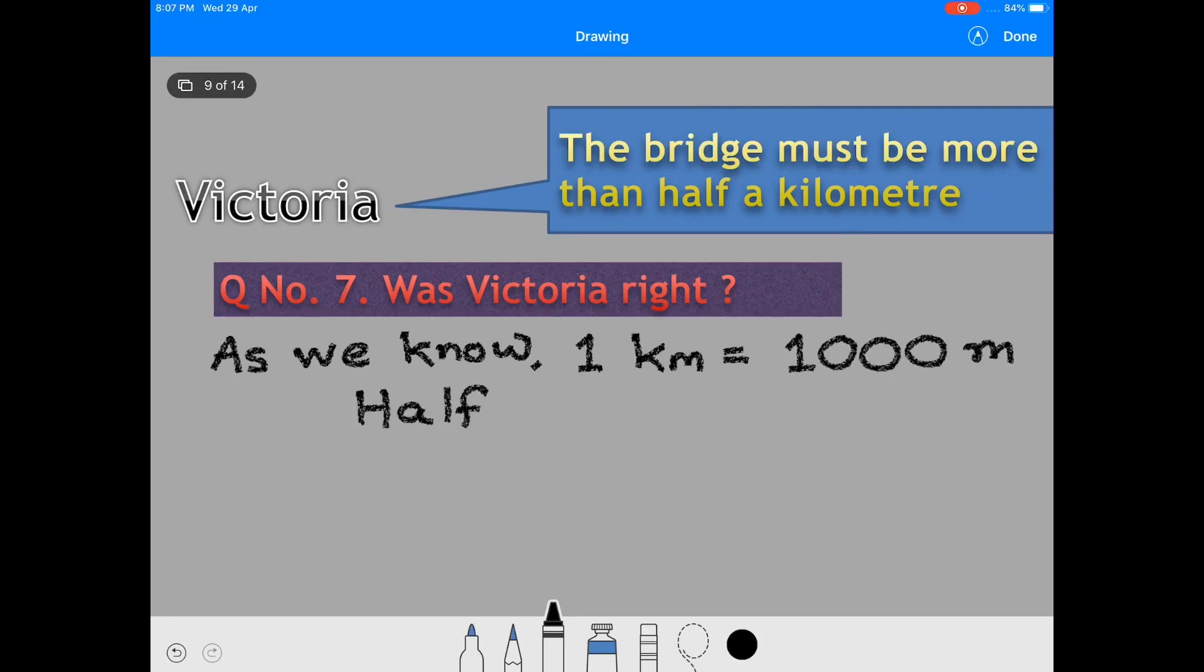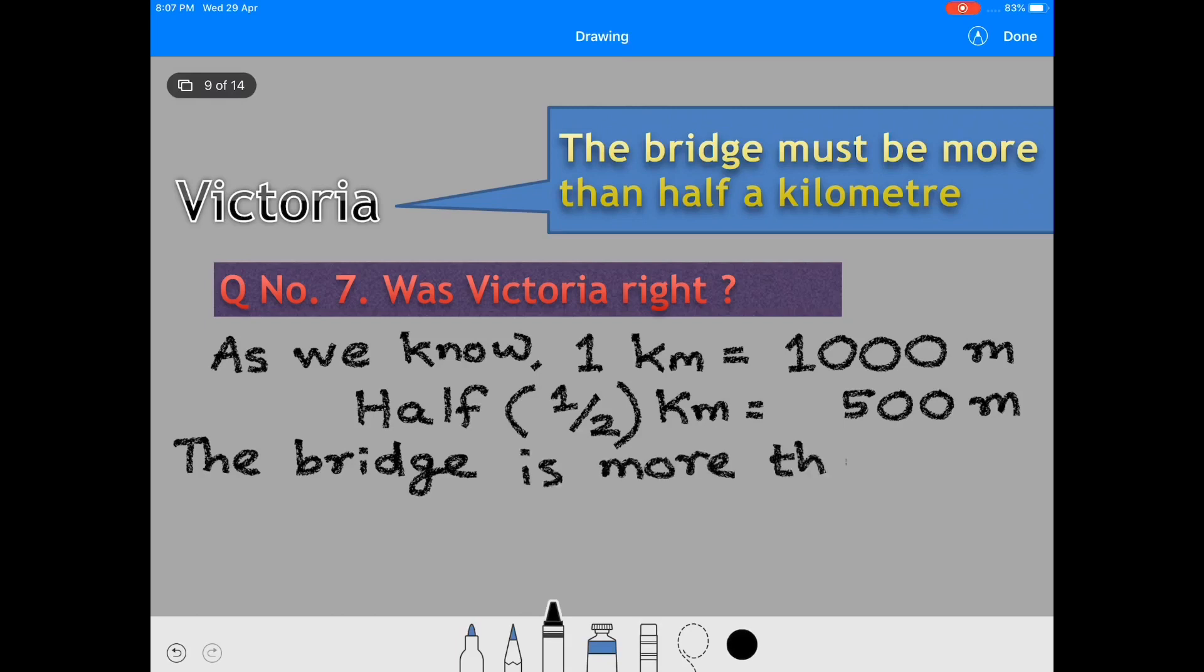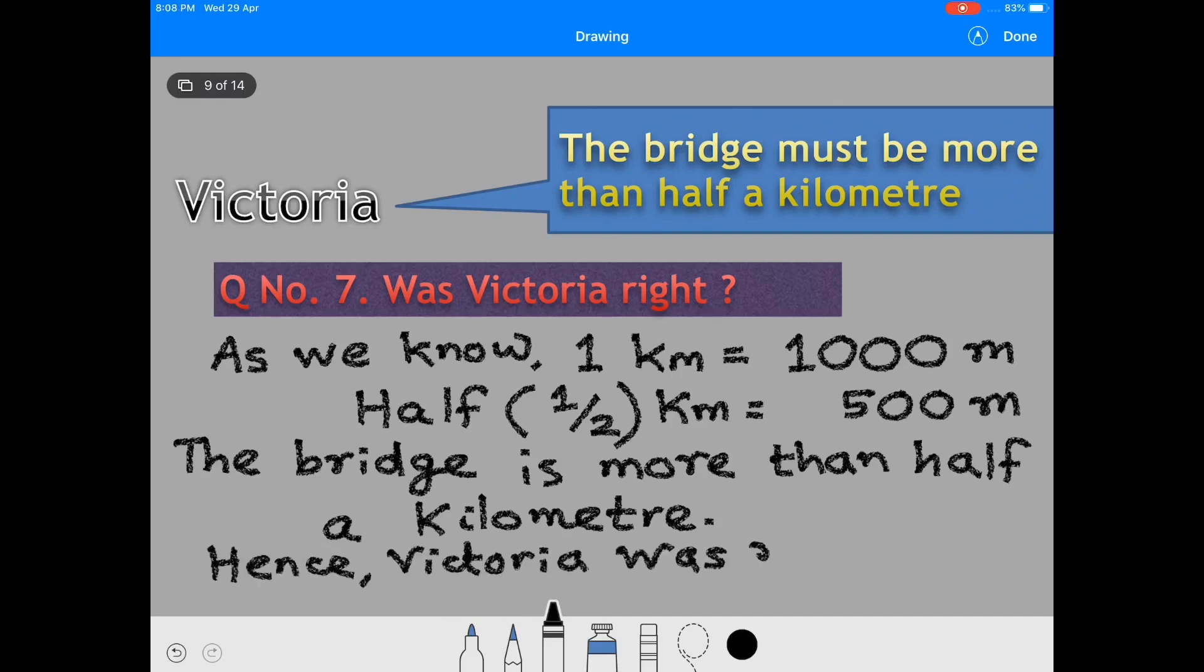As we know, one kilometer is equal to 1000 meters. Half kilometer is equal to 500 meters. The bridge is 756.82 meters long, so the bridge is more than half a kilometer. Hence, Victoria was right.